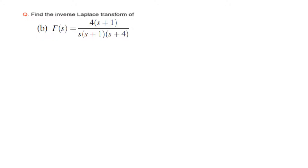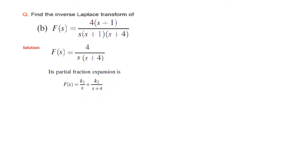This is our second problem. If you see, we have s plus 1 terms in both the numerator and denominator, so we can cancel this and the simplified form will be 4 divided by s times s plus 4. In partial fraction terms it will be k1 over s plus k2 over s plus 4. To find the unknowns k1 and k2, we take help of the residue method. For k1, the denominator multiplied is s times f(s) with s equal to 0 as the condition.